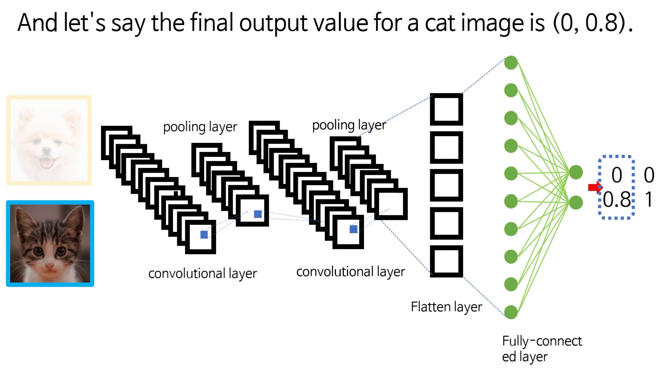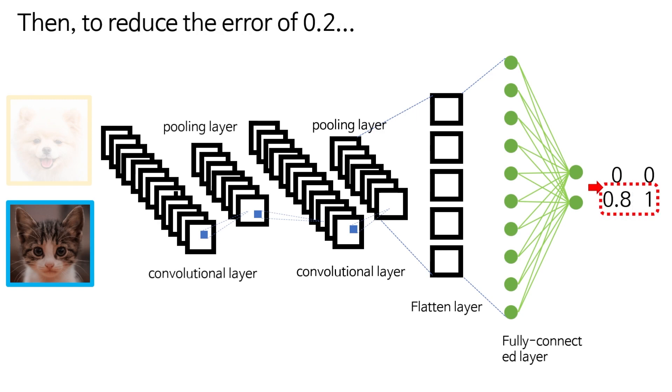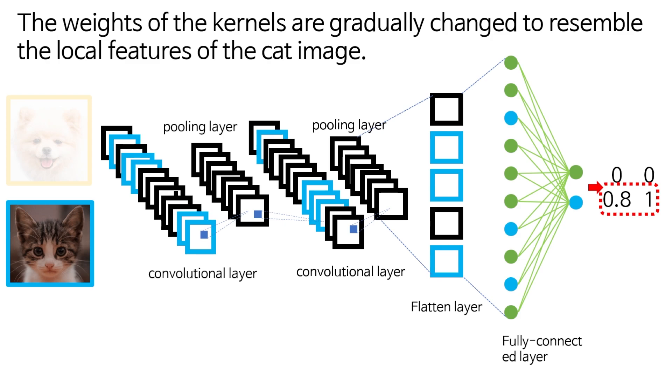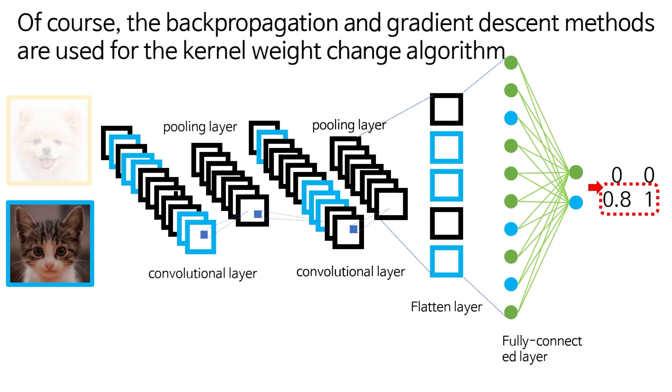Let's say the final output value for a cat image is 0, 0.8. Then to reduce the error of 0.2, the weights of the kernels are gradually changed to resemble the local features of the cat image. Of course, backpropagation and gradient descent methods are used for the kernel weight change algorithm.